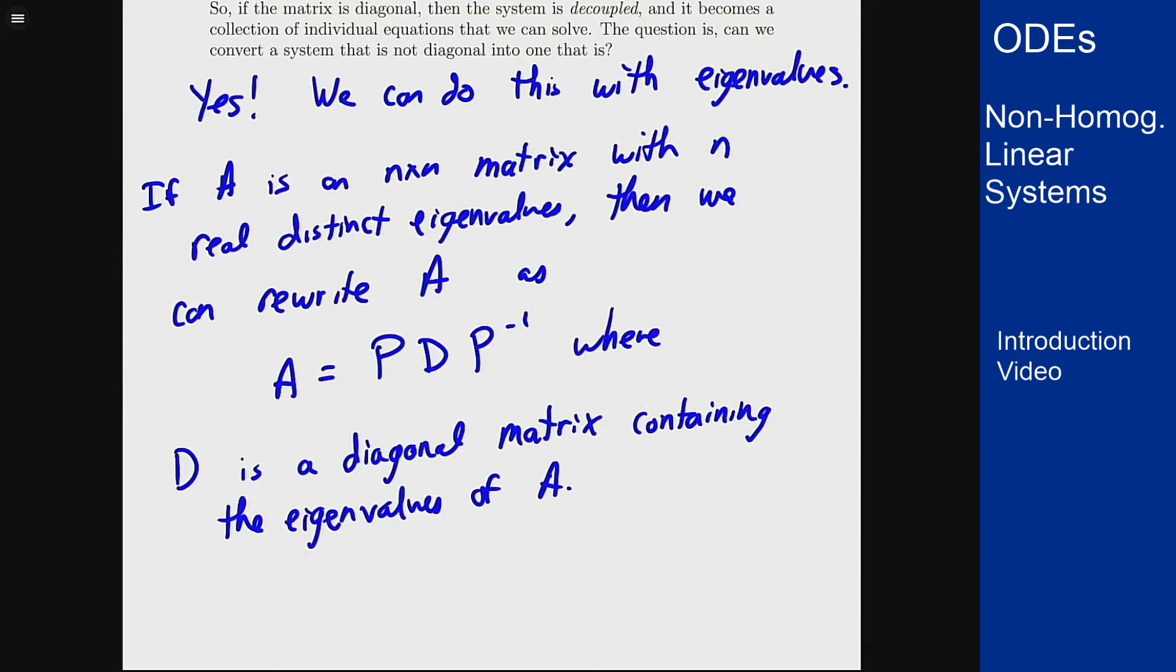And P is a matrix whose columns are the eigenvectors of A in the same order as the eigenvalues were put into D.